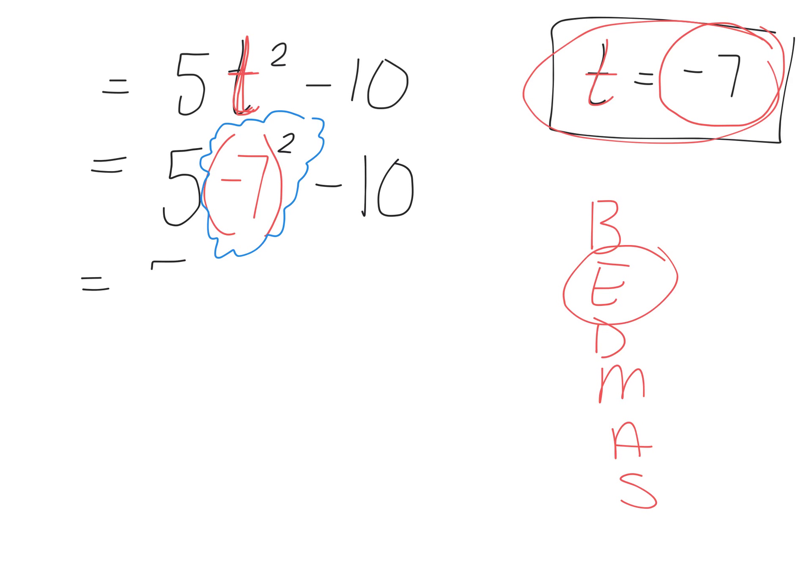This question here says 5, times whatever this exponent, whatever this power is simplified to. It's 5 times negative 7 squared. Well what's negative 7 squared? Yes? 49. Right? Then we subtract 10.